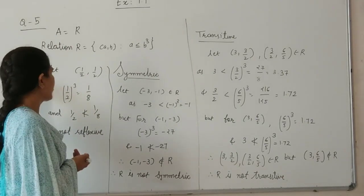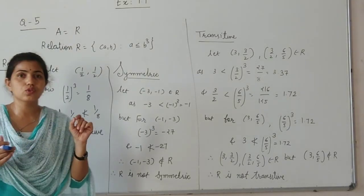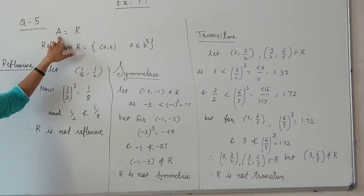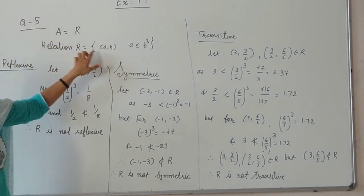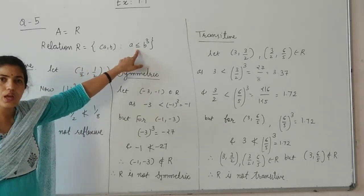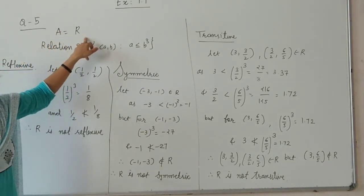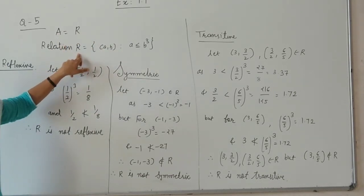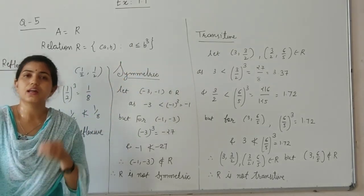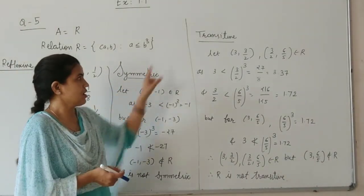Now the question number 5 from our textbook is: if a relation R is equal to all those elements (a, b) where a is less than or equal to b³, in the set of real numbers R. So here the set A is equal to R, and the relation R is defined as (a, b) where a is less than or equal to b³. Now we have to check if the relation is reflexive, symmetric, and transitive.